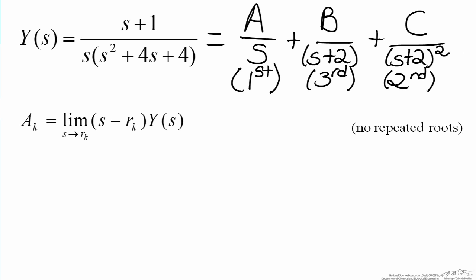First, we will solve for A. The equation that we use to solve for A has been reproduced on the screen. Here, even though it is just s, the root here is implicitly zero. So therefore in this case, r sub k for both cases here equals zero.